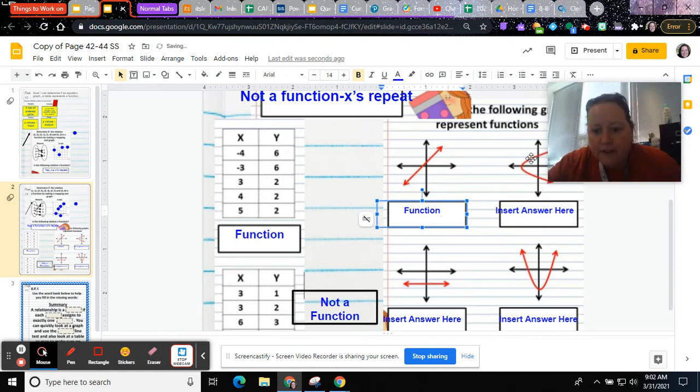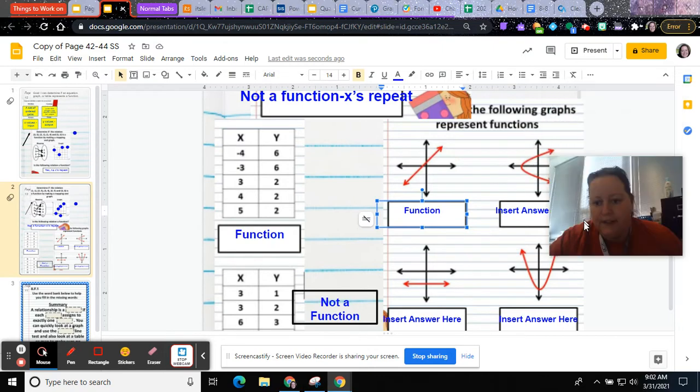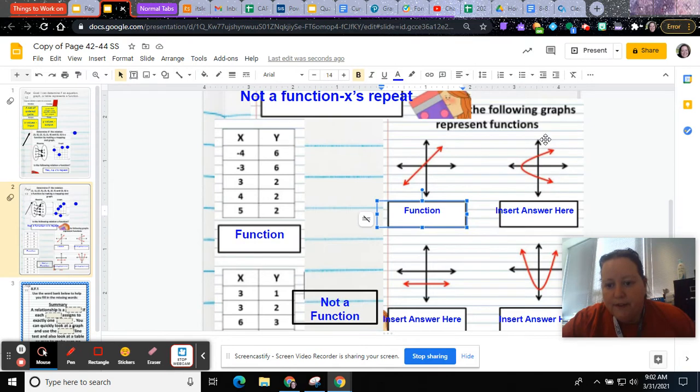However, if we look here, do you see right here, if I were to draw a vertical line, it crosses that line twice, all of these different places. And so this one is not a function because the x value would have to repeat.